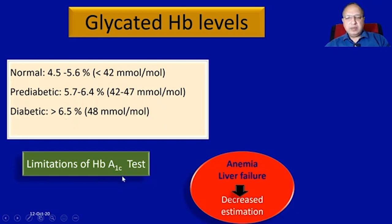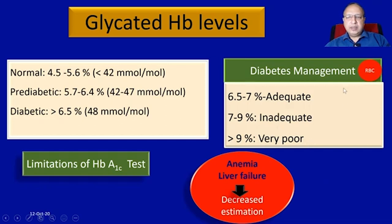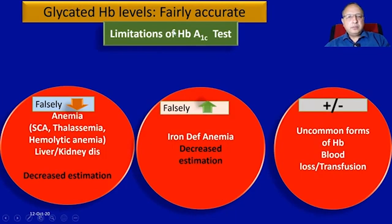Limitations of the HbA1c test include decreased estimation if a person has anemia or liver failure. Falsely high levels are seen in iron deficiency anemia. It can also give altered results with increased levels of uncommon forms of hemoglobin, blood loss, or blood transfusion cases.